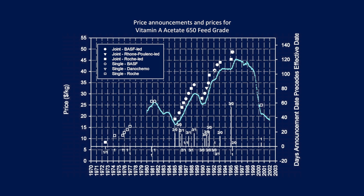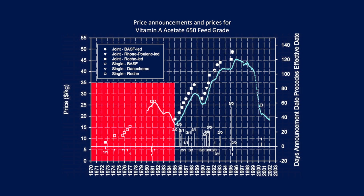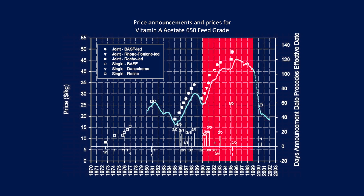Looking at this graph, the key pattern is the distinct difference between behavior before and after 1985. After 1985, you see regular price increases, mainly joint price announcements, a rotation in the identity of the announcement leaders, and significant lead times prior to effective dates. Before 1985, there is a more irregular pattern, primarily single announcements made by one firm — the market leader Hoffman LaRoche — not followed by anyone. Interestingly, the firms only pled guilty to conspiracy starting in 1990, not for the period from 1985 to 1990. So the question is: did the conspiracy begin in 1985 or in 1990?